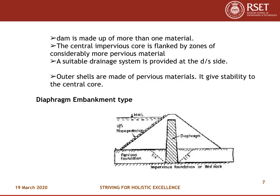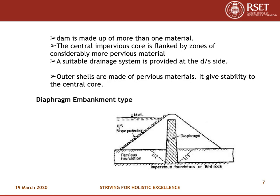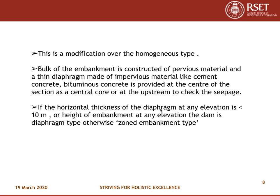Diaphragm embankment type: This is a modification over the homogeneous type. The bulk of the embankment is constructed of pervious materials, and a thin diaphragm made of impervious material such as cement concrete or bituminous concrete is provided either at the center as a central core or at the upstream face to check seepage. If the horizontal thickness of the diaphragm at any elevation is less than 10 meters or the height of the embankment, it is a diaphragm type; otherwise it is a zoned embankment type.